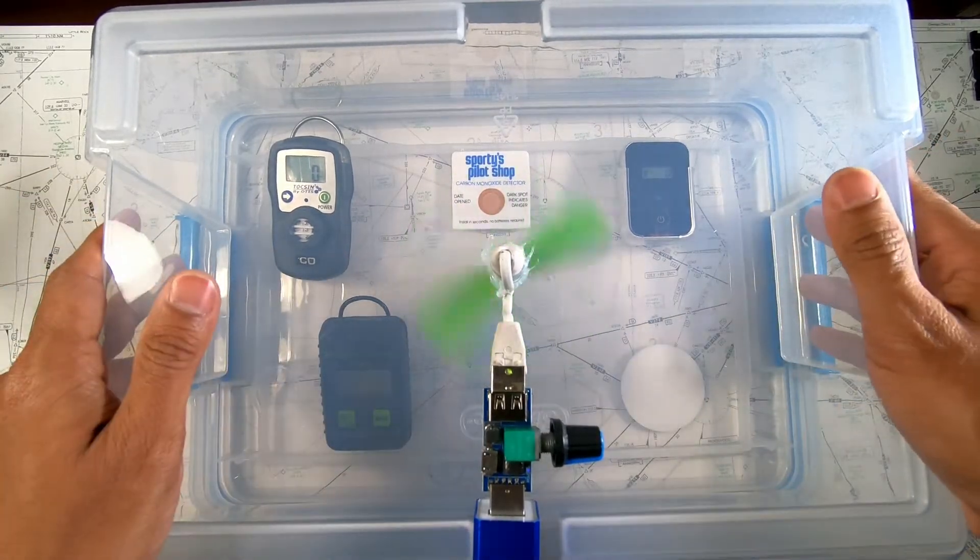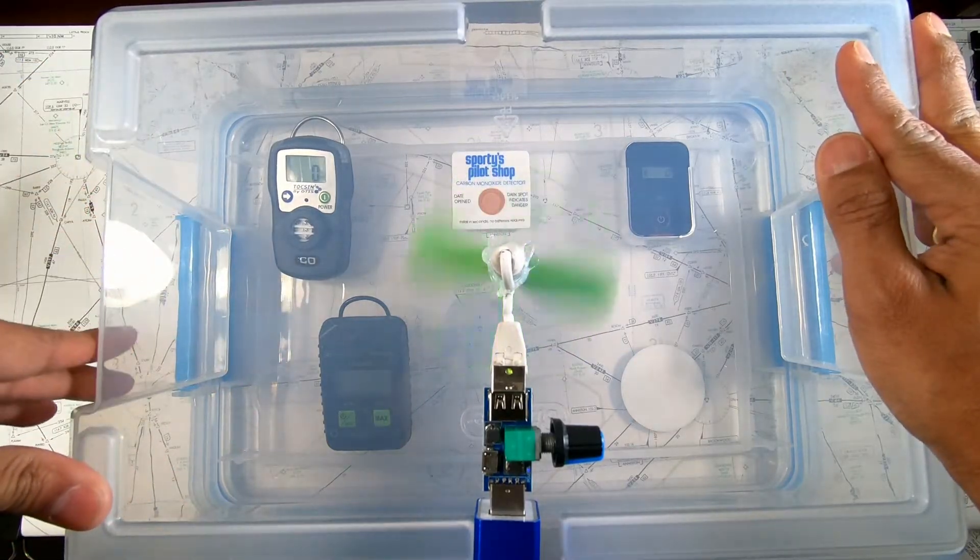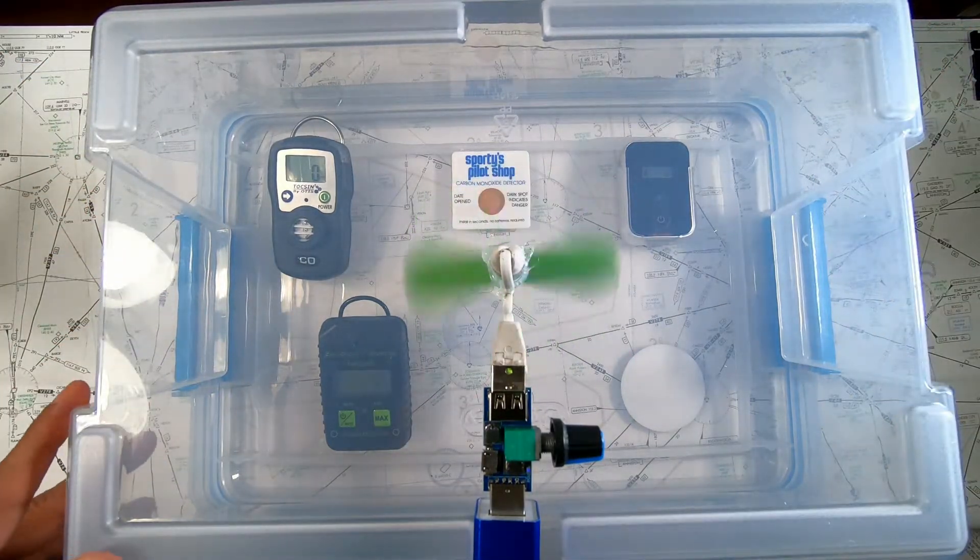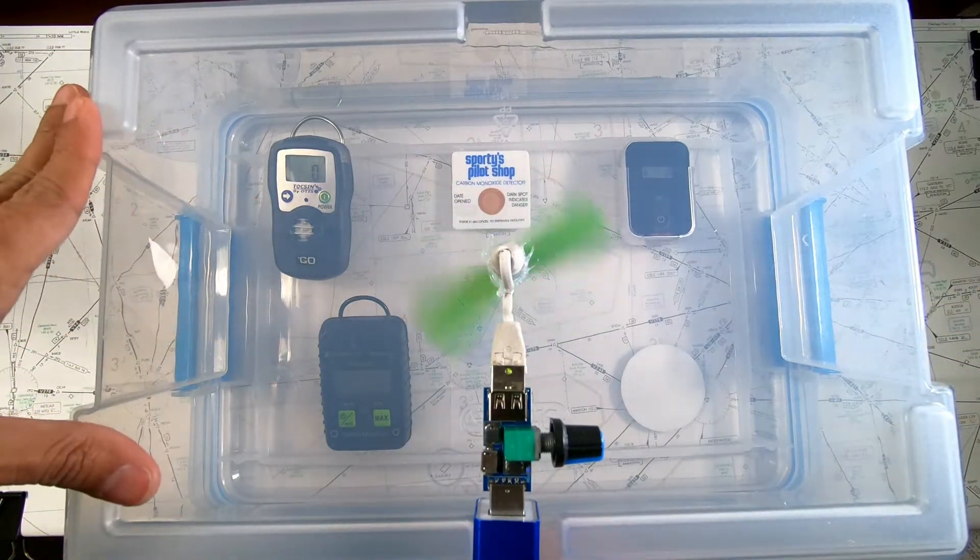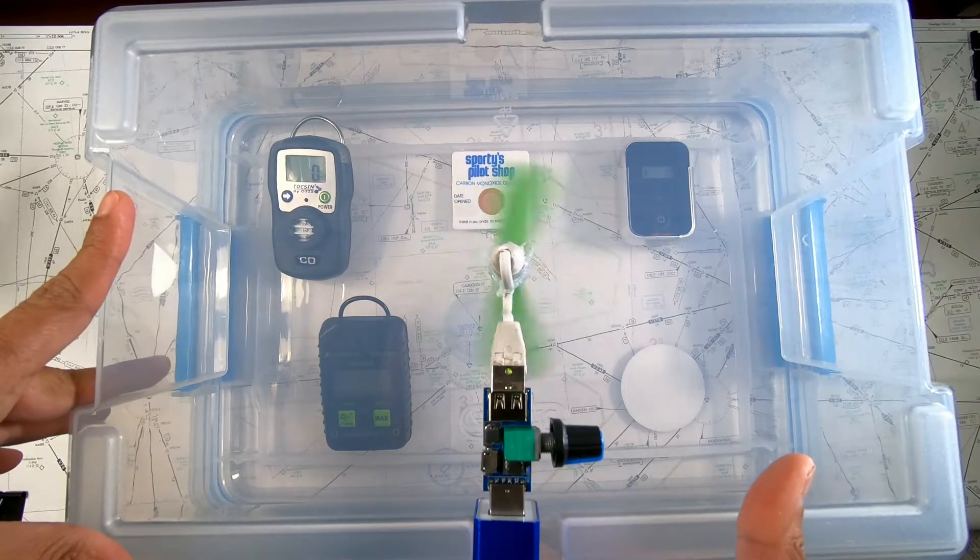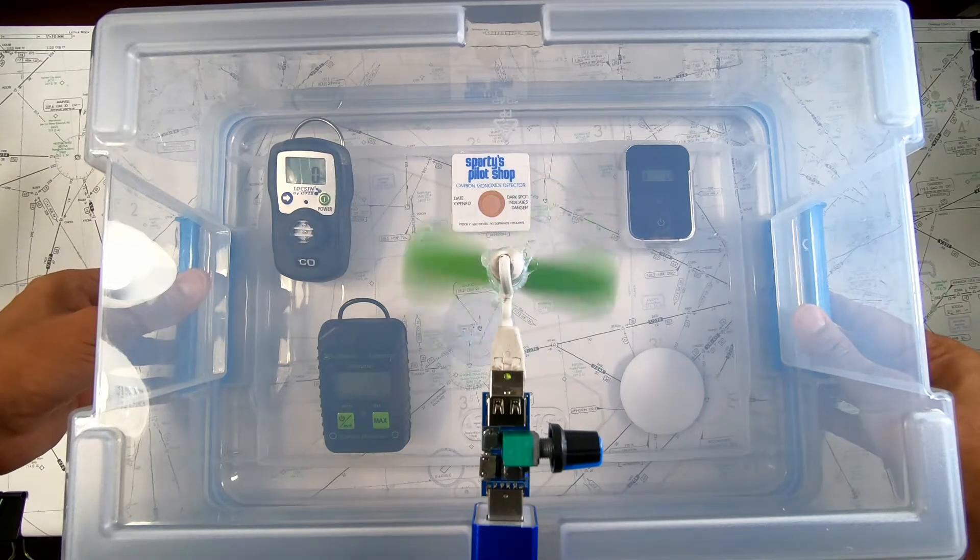Alright, my test setup here is simple. I have a box in which I have placed the carbon monoxide detectors that I am planning to test. And I have a small fan and I'm going to be introducing carbon monoxide from one of the sides. Remember that this is not perfectly airtight.